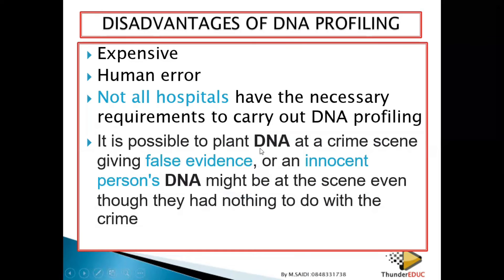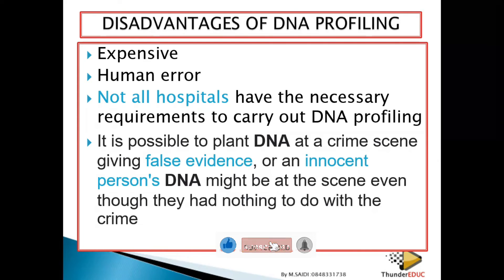Another disadvantage: it is possible to plant DNA at a crime scene, giving false evidence. If someone wants to frame you, DNA can be planted. This means innocent persons' DNA might be at a crime scene even though they had nothing to do with the crime. For example, if you are just passing by and your hair drops, when they collect the sample they take your hair — and your DNA profile shows you were there at the time the crime was committed, making you a suspect.